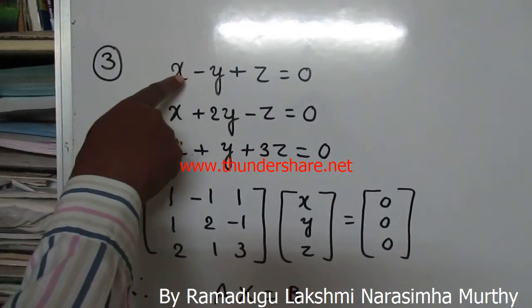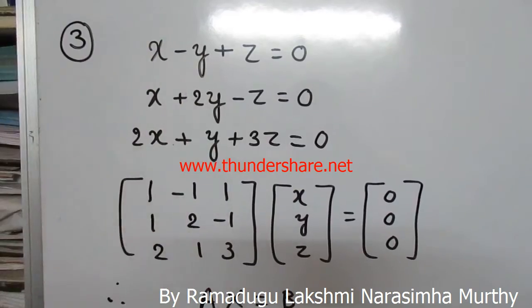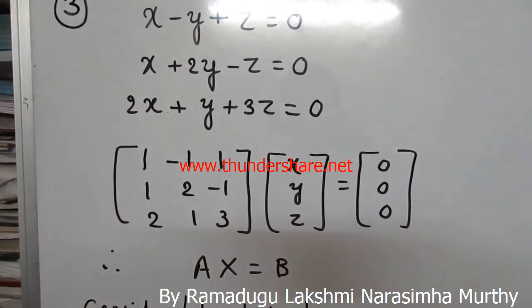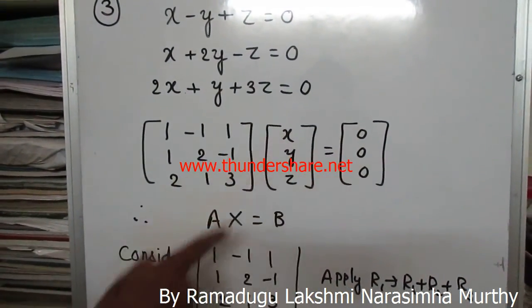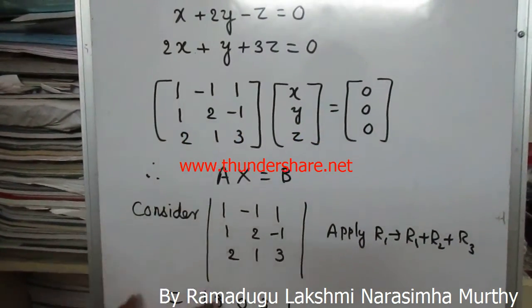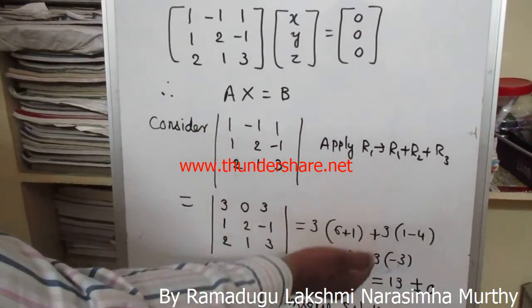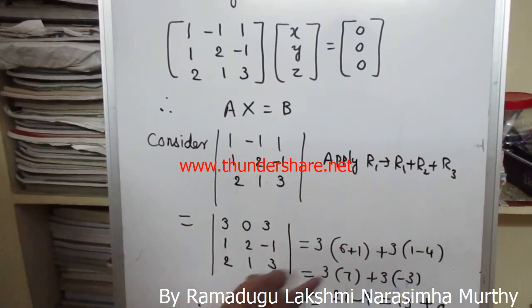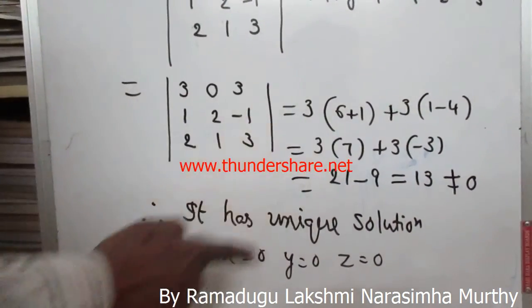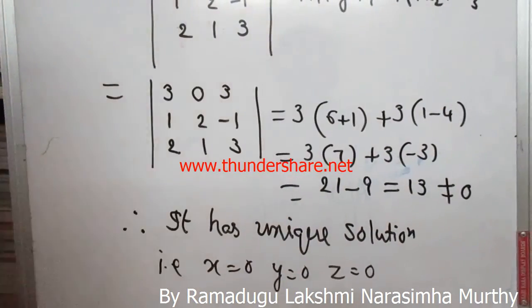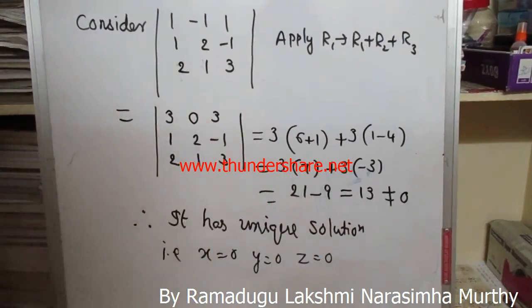Given equations: x - y + z = 0, x + 2y - z = 0, 2x + y + 3z = 0 — homogeneous equations. Writing in matrix form AX = B with coefficient matrix [1,-1,1; 1,2,-1; 2,1,3]. Applying R1 → R1+R2+R3 and finding the determinant: 3(6) - (-1)(1) + 3(1-4) = 18+1-9 = 13. Since determinant ≠ 0, there is a unique solution: x = 0, y = 0, z = 0.